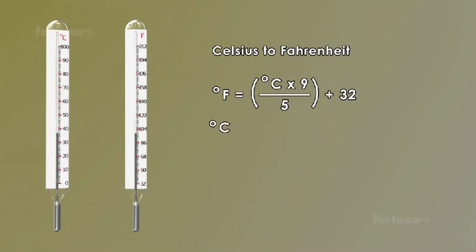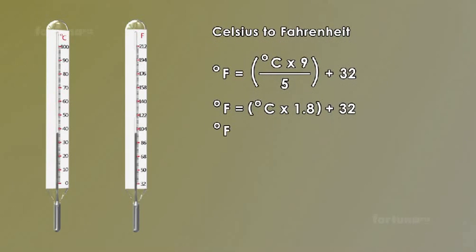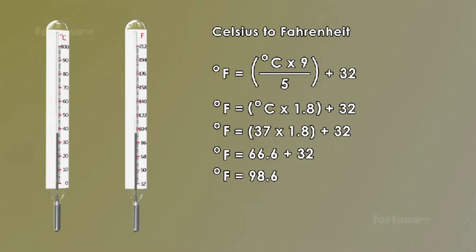Where degrees C represents the temperature on the Celsius scale we can even simplify that equation and avoid fractions. F is equal to C multiplied by 1.8 plus 32. For example 37 degrees Celsius can be converted to Fahrenheit by substituting the value of C into the equation.